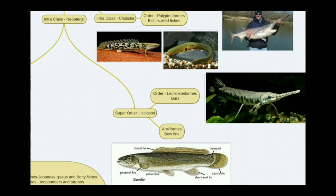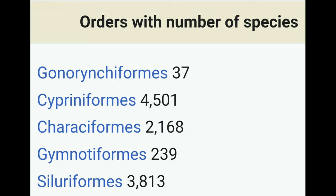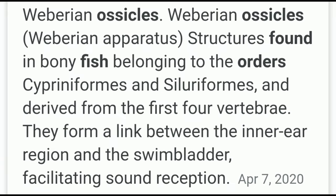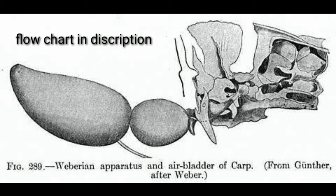Superorder Teleostei has 40 orders, 48 families, and over 2,600 species. An important feature is that five orders — Gonorynchiformes, Cypriniformes, Characiformes, Gymnotiformes, and Siluriformes — possess Weberian ossicles. These five orders account for 28 percent of known fishes and 68 percent of fish species, found on all continents except Antarctica. Weberian ossicles are an apparatus found in bony fishes that form a link between the inner ear and the swim bladder, facilitating sound reception.